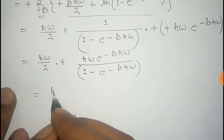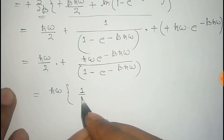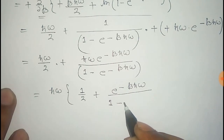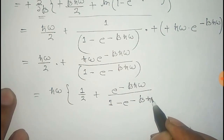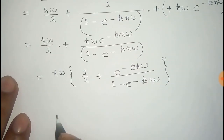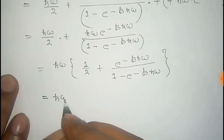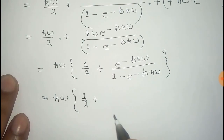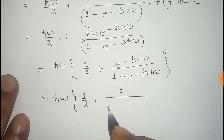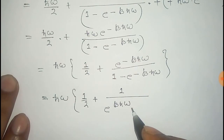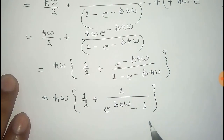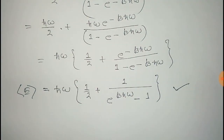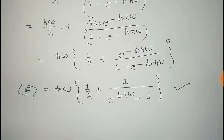Now we take ℏω as a common factor. To simplify the remaining expression, multiply e^(βℏω) on top and bottom, giving 1 in the numerator and e^(βℏω) minus 1 in the denominator. Thus we get the final expression of average energy for a one-dimensional harmonic oscillator.